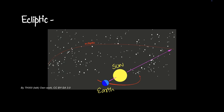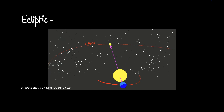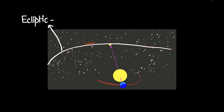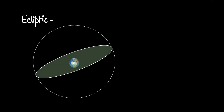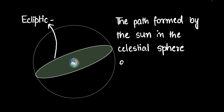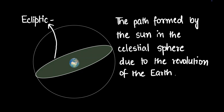Now for the last term: the ecliptic. The sun and the Earth are shown here. From the Earth, when you look at the sun, it appears to be amongst the stars at a certain point on the celestial sphere. As time passes and the Earth moves, the sun appears to move to a different point on the celestial sphere. A few months later, it appears somewhere else. The sun is moving along a line on the celestial sphere — that line is the ecliptic. The path formed by the sun in the celestial sphere during the revolution of the Earth is the ecliptic.